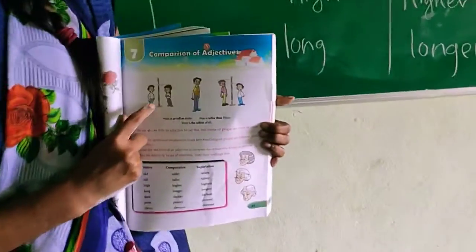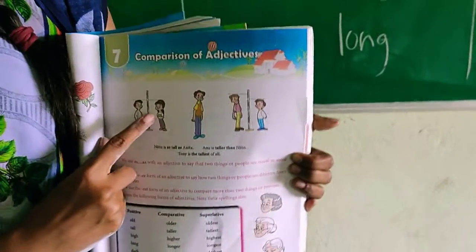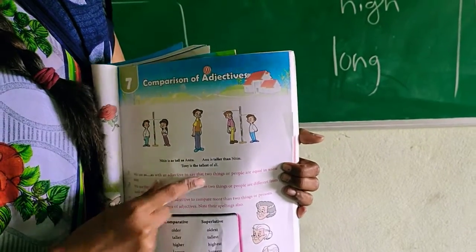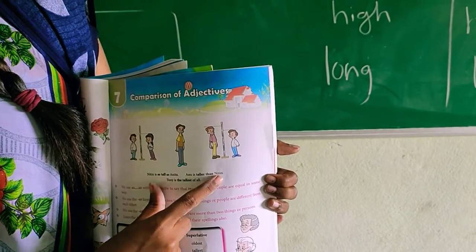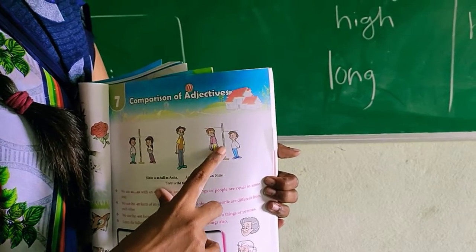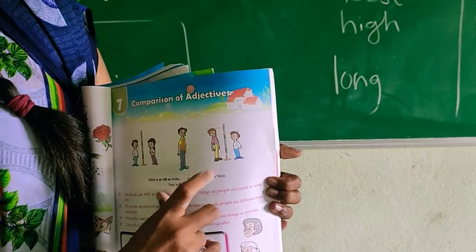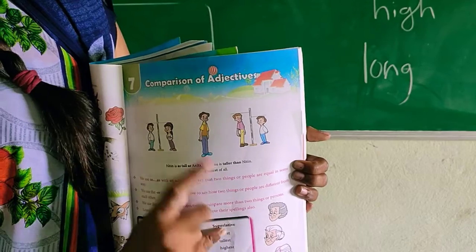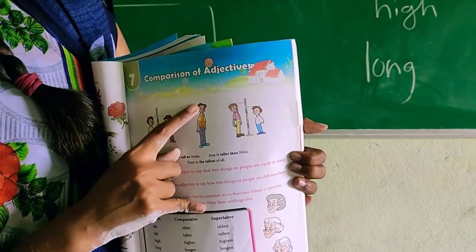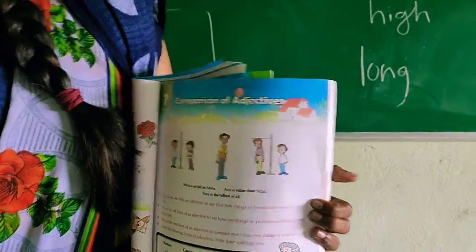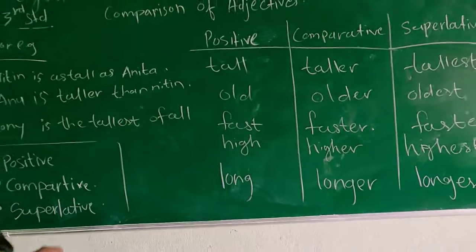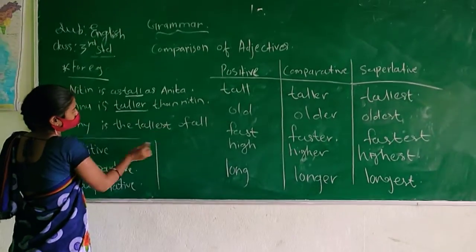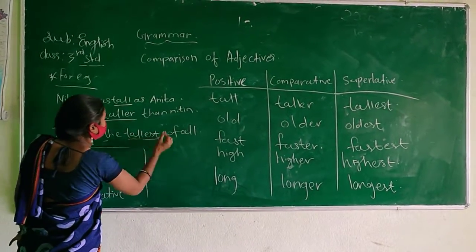See, Nitin is tall, tall as Anita. Anu is taller than Nitin. And Tony is the tallest of all. See here: tall, taller, and tallest.